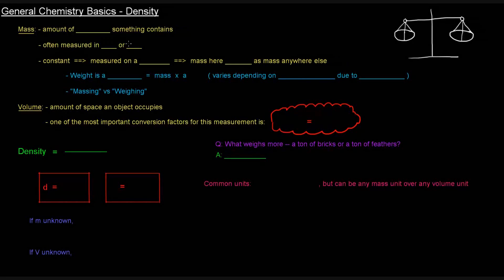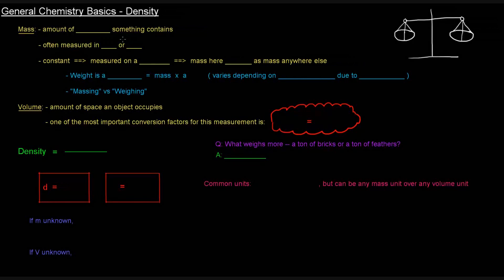Next up we have density. So what is density? Well, before we can talk about density, we have to talk about two other things, and those are mass and volume.